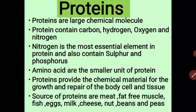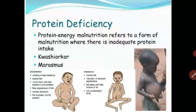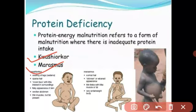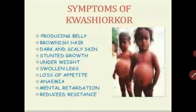Protein is very important for us. If there is a deficiency of protein in our diet, we suffer some diseases. The two important protein deficiency diseases are Kwashiorkor and Marasmus. Kwashiorkor is a protein deficiency disease that usually affects young children, specifically children aged 1 to 5 years.